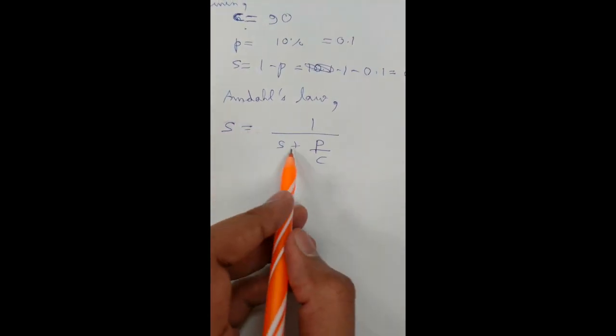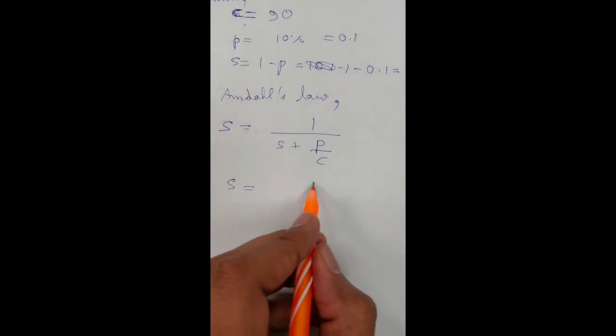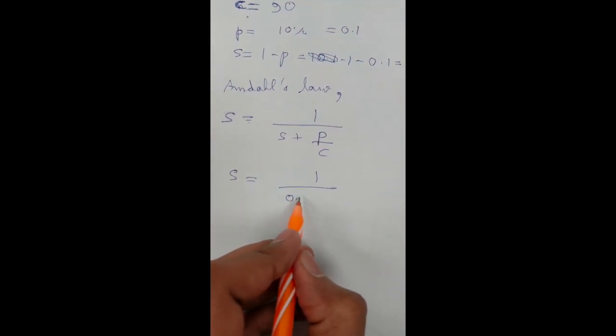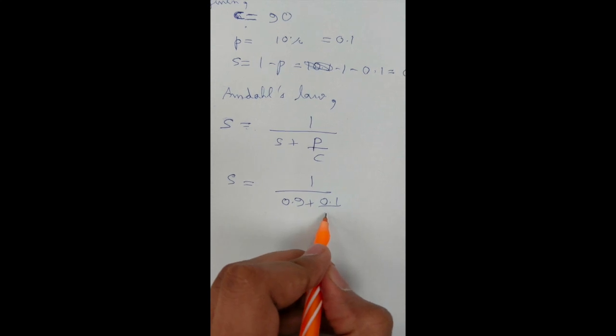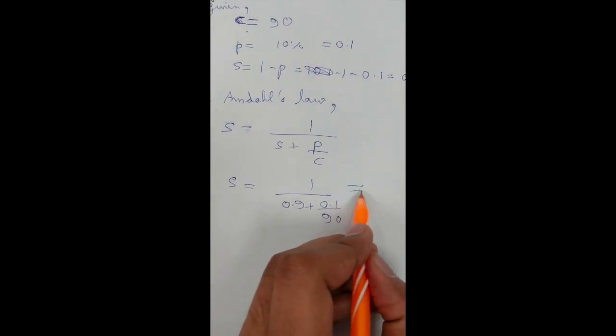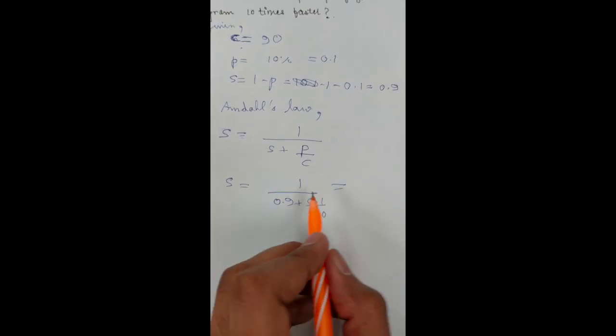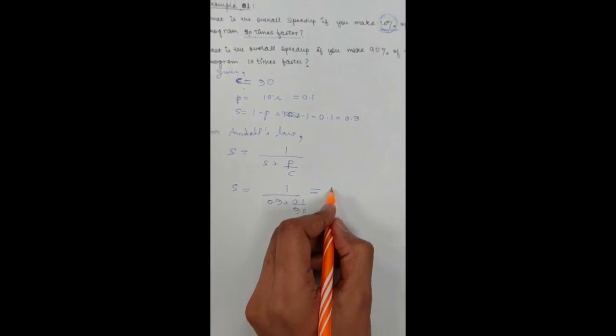Putting the formulas inside it, we can conclude that it is 1 upon (0.9 + 0.1/90). And after calculating it, I get speed up for the first question is 1.11.